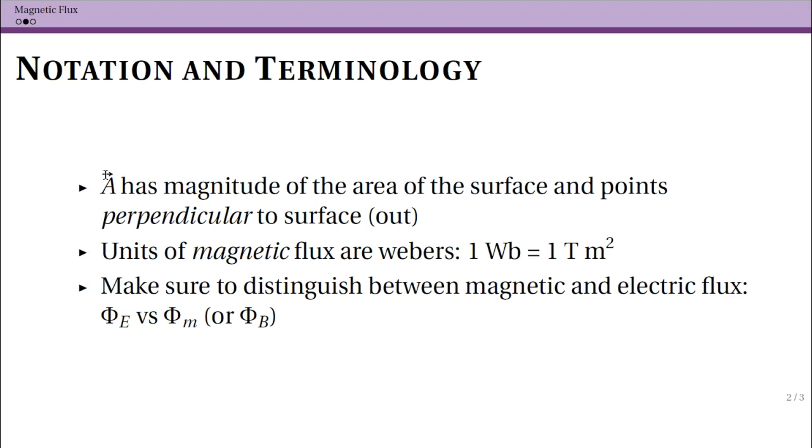One thing with electric flux, when we did Gauss's Law, it was an enclosed surface, for instance, a sphere. With magnetic flux, it's going to be the surface of a loop. Think disc. So electric flux, you had a sphere. Magnetic flux, you're going to have like a disc.